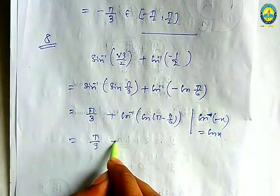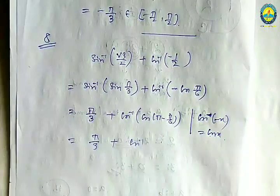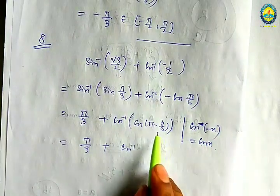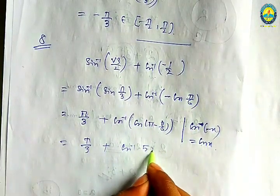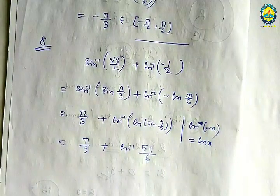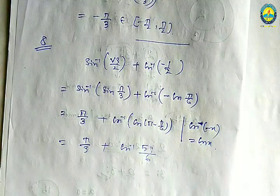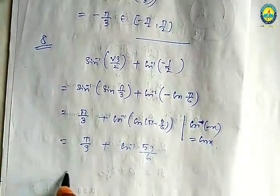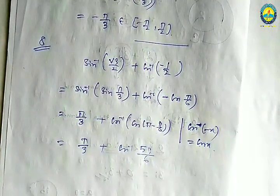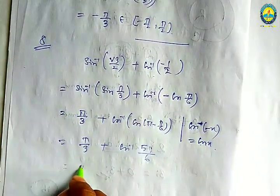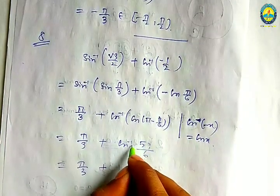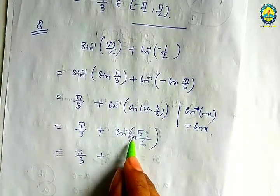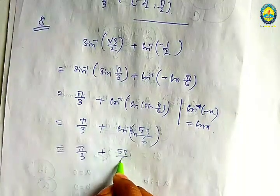So it will have pi by 3 plus cos inverse. It will be 6 pi minus pi, then 5 pi by 6. Pi by 3 plus cos cancels, giving 5 pi by 6.